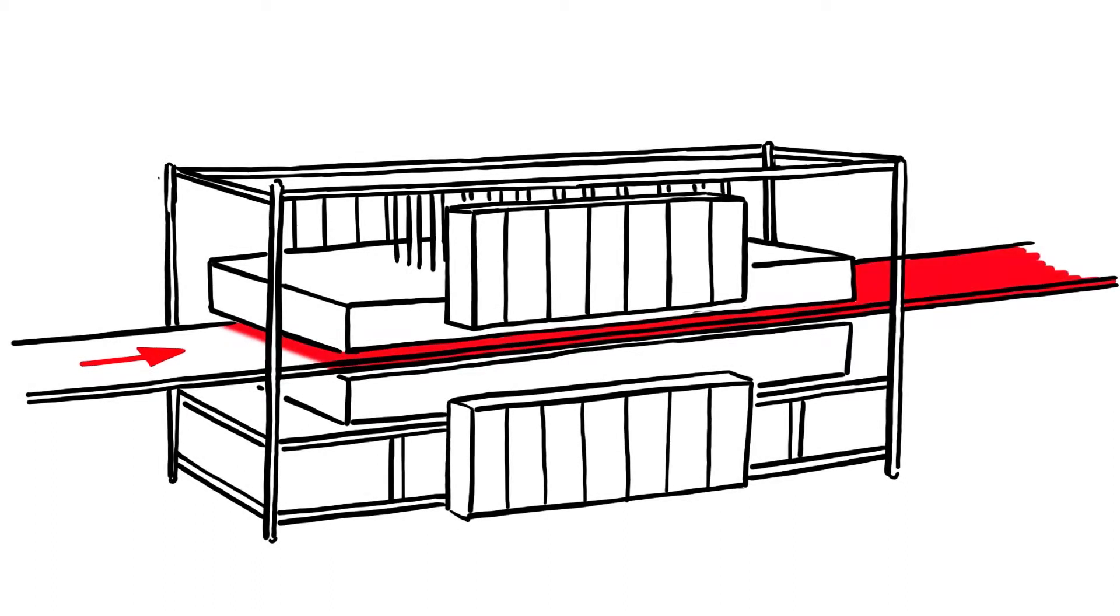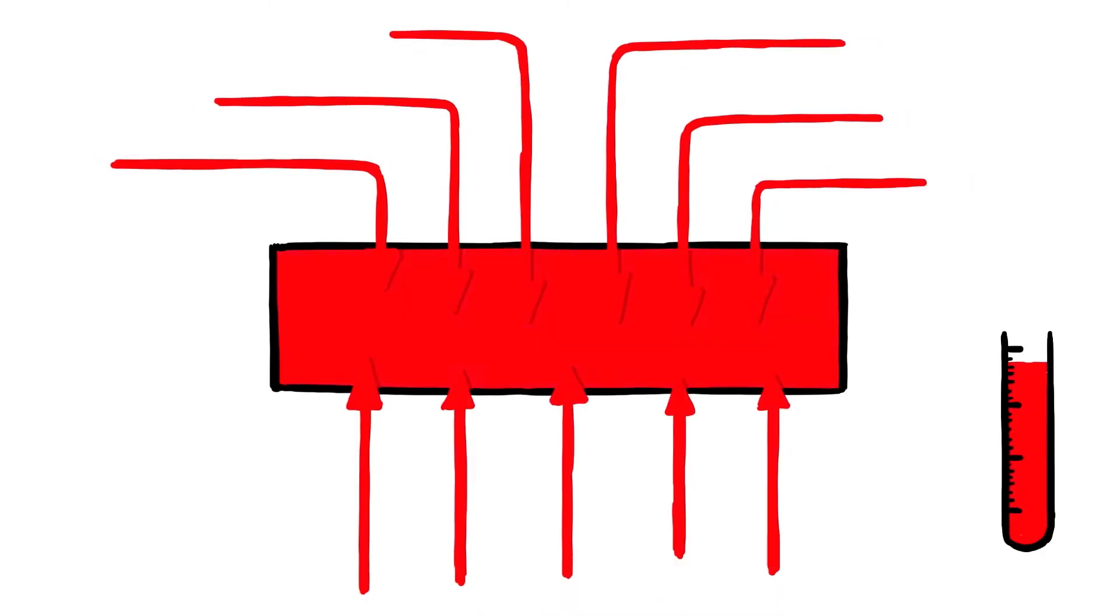The microwave heats the mat before it enters the press. Microwave radiation penetrates the mat and heats it evenly right into its core.